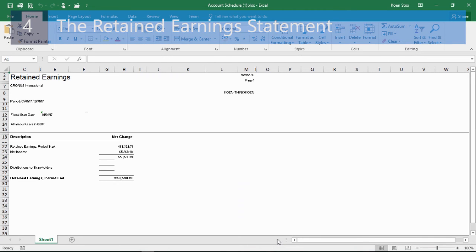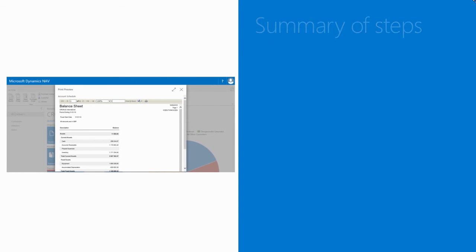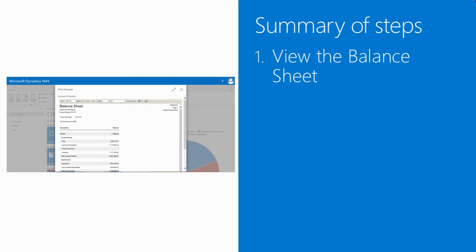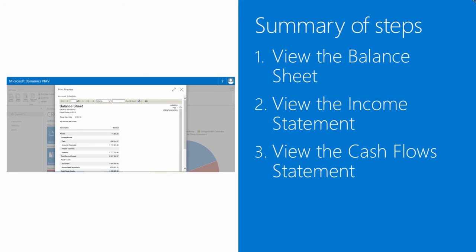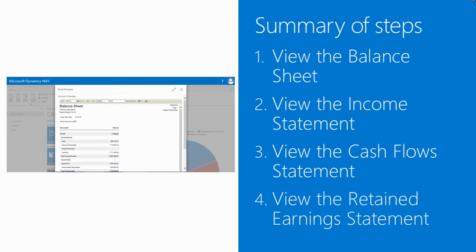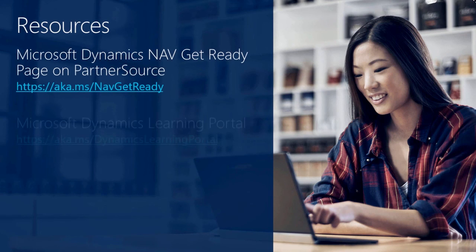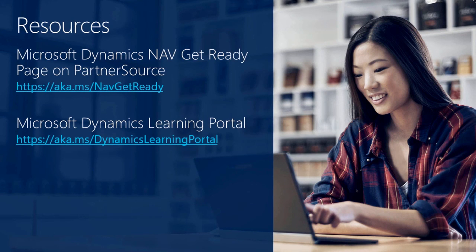This is what the statement of retained earnings looks like. In this video I demonstrated how to run financial reports from the business manager role center. We looked at the balance sheet, the income statement, the cash flow statements, and the retained earnings statements. For more information on these topics please refer to the following resources. Thank you for watching this How Do I video on Microsoft Dynamics NAV 2017.